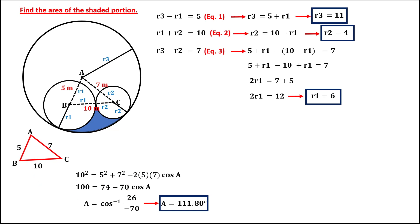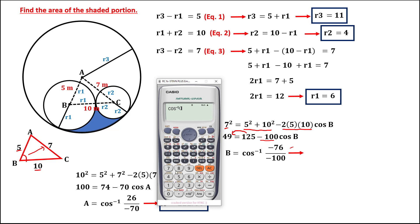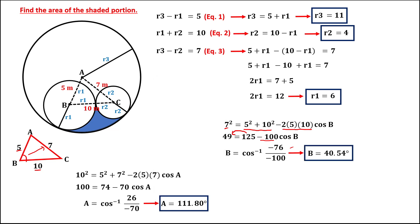To solve for angle B, the square of the opposite side equals 5 squared plus 10 squared minus 2 times 5 times 10 times cosine angle B. Simplifying: 49 equals 125 minus 100 cosine B. So angle B equals inverse cosine of negative 76 over negative 100, which equals 40.54 degrees.